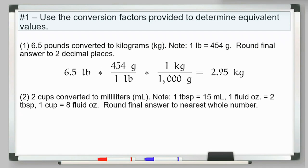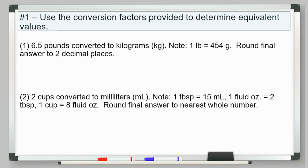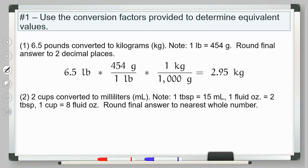So let me explain that. We want to convert 6.5 pounds to kilograms. We want to convert from pounds to kilograms. What conversion did I provide you? A ratio of pounds to kilograms. The ratio I gave you is that for every one pound, that is equivalent to 454 grams. That is a ratio, and I can use that ratio here. I set up with the units where I want them, because remember what I want to do is multiply and cancel out my units.